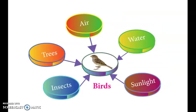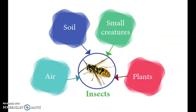Birds are dependent on air, water, sunlight, insects and trees. Similarly, insects are dependent on soil, small creatures, plants and air.